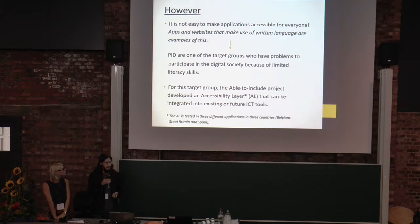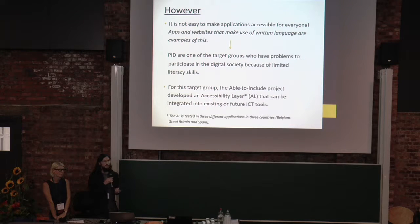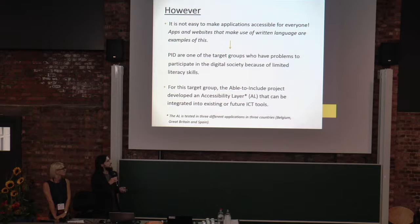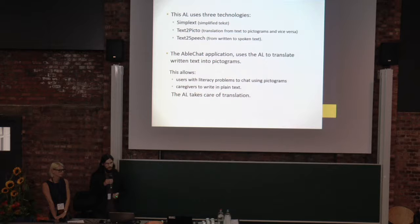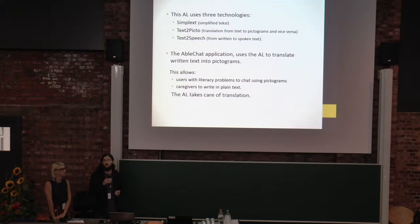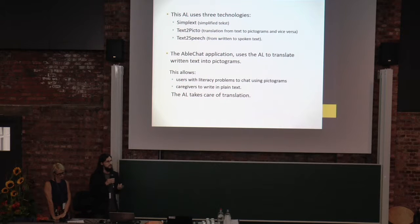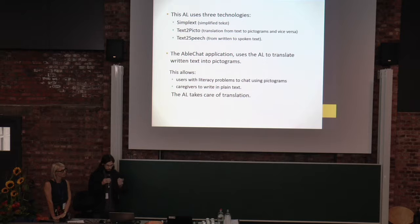For this target group, the Able to Include project developed an accessibility layer that can be integrated into many future ICT tools. We are one of the pilot projects testing this layer. It consists of three components: simplifying text into more easy-to-understand language; translating text into pictograms; and translating text into speech.